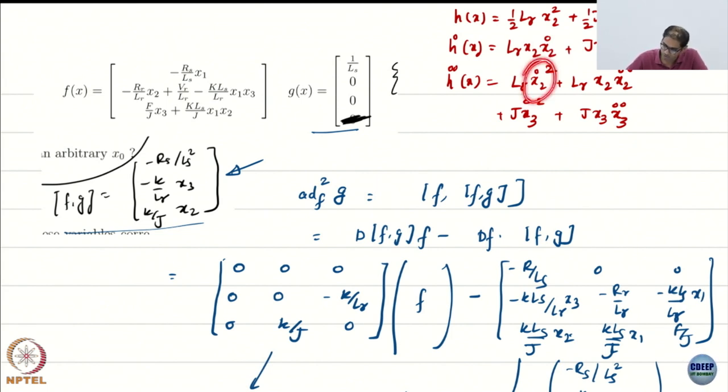This is lr x2 dot square plus lr x2 x2 double dot plus j x3 dot square plus j x3 x3 double dot. This product rule used. I do not want to write this mess. So I am avoiding writing it. Now what do I know? I know that x2 dot square and x3 dot square are not bringing the control. Because x2 dot is this, x3 dot is this, does not have the control in it. But when I take the double derivative of x2 and in fact the double derivative of x3, I have to take derivatives of these guys.